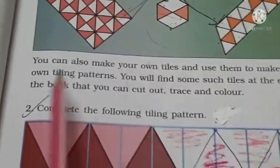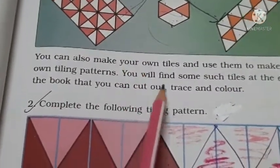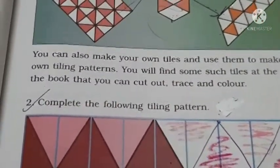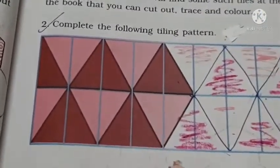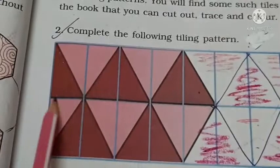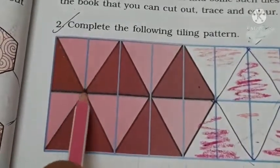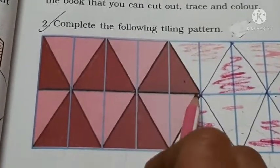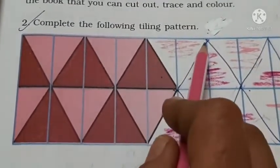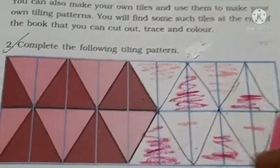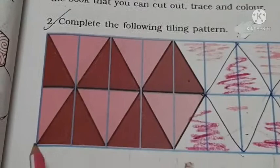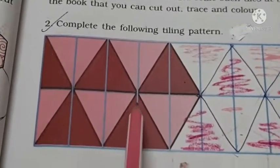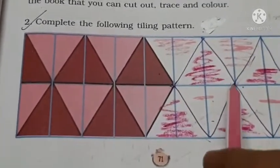You can also make your own tiles and use them to make your own tiling patterns. You will find some such tiles at the end of the book that you can cut out, trace, and color. Now complete the following tiling pattern — here you can see a rectangle, and the pattern goes: one triangle up, one down, then up, then down, continuing this way to make your own pattern.